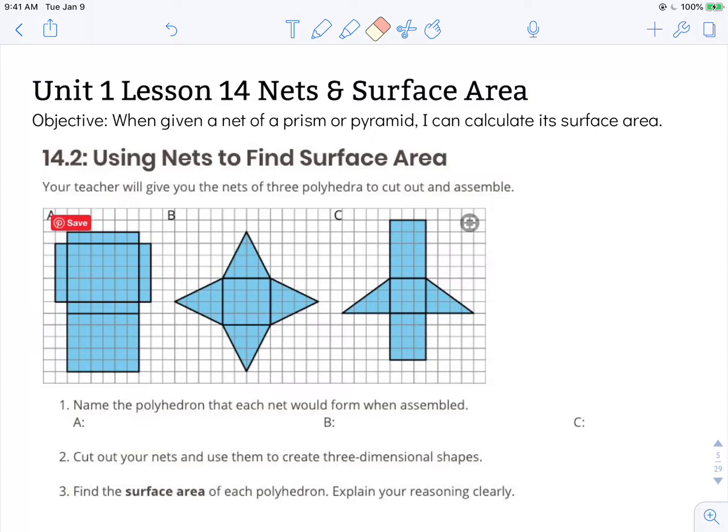The objective states when given a net of a prism or a pyramid, I can calculate its surface area. Just to remind ourselves the difference between a prism and a pyramid: A pyramid has one unique face and then all of the other faces are triangles. And a prism is made up of two bases that are exactly the same. They're congruent. They're the same shape and size. And then every other face is a rectangle.